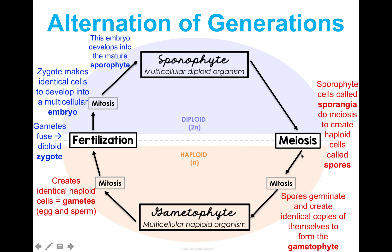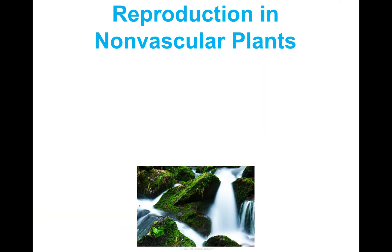Spores can germinate — meaning grow and develop — and create identical copies of themselves, which will grow and form the gametophyte, the multicellular haploid organism, and then the cycle starts over. In this diagram it looks like 50/50 — half sporophyte, half gametophyte — but that's not the case. It depends on the type of plant, so we'll look at different plant categories and how they go through alternation of generations differently.